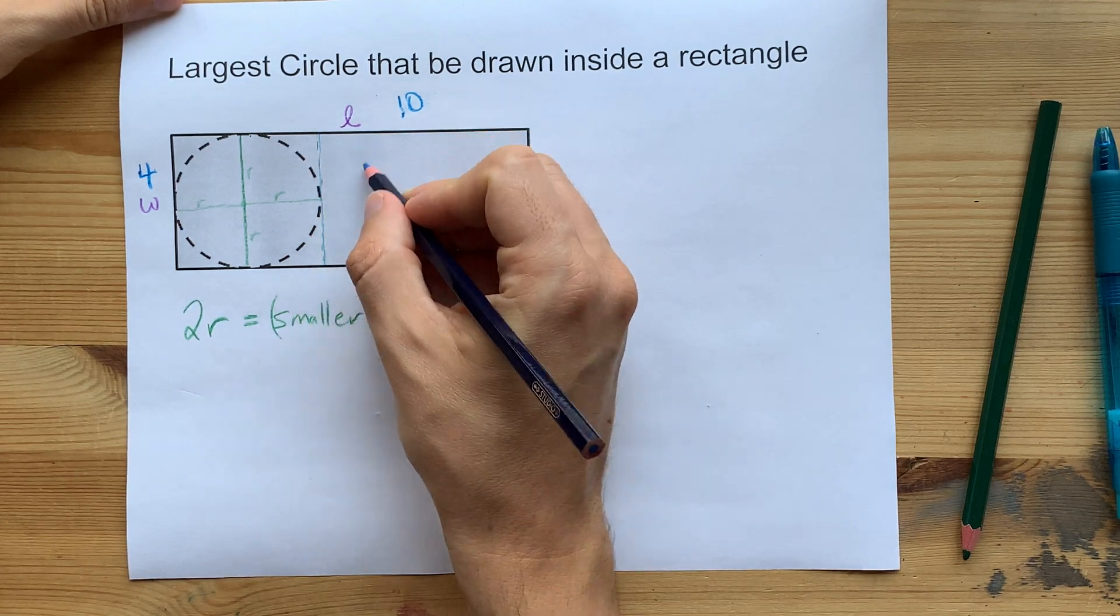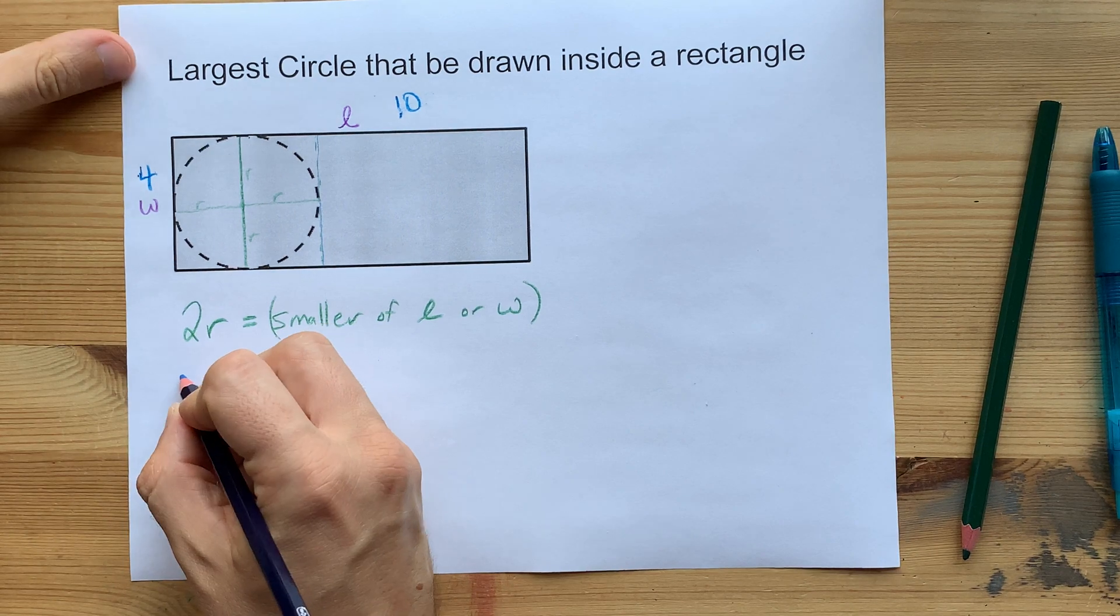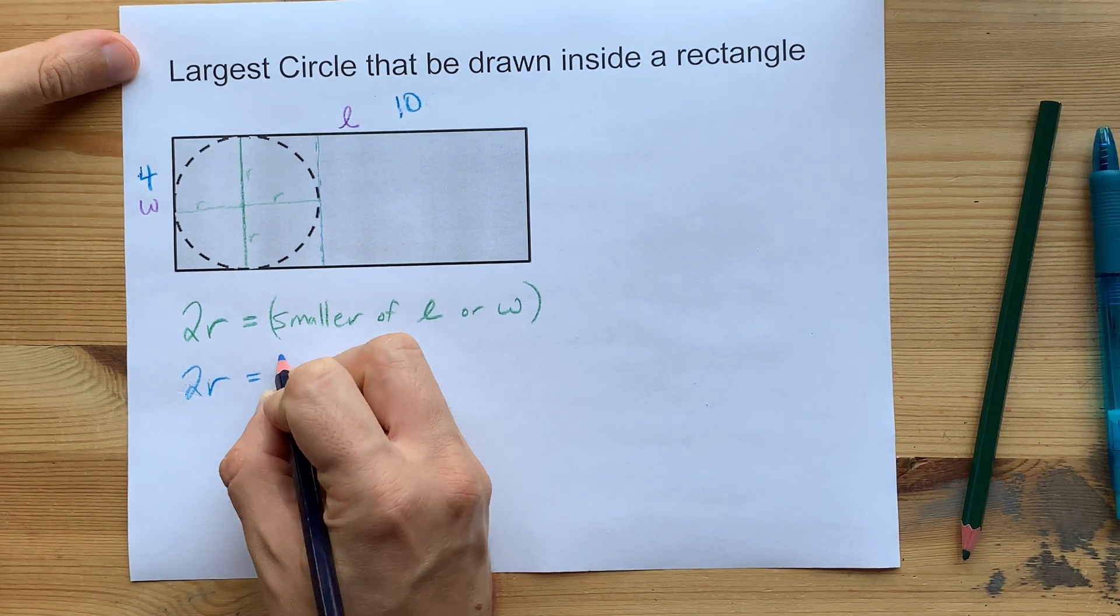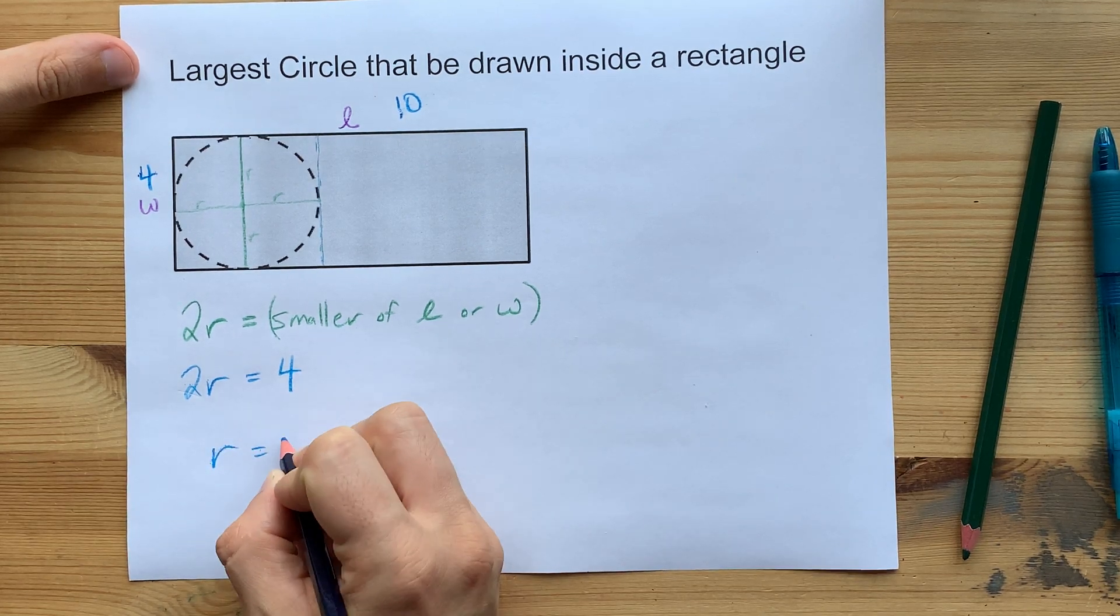And you've got an extra 6 over here that you're never going to use. So the point there is that 2R would equal the 4, the smaller of the two dimensions, and the R would be 2.